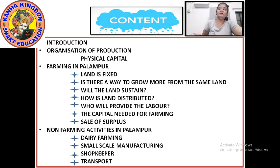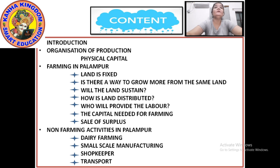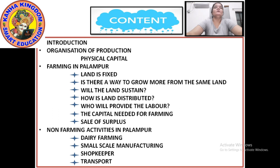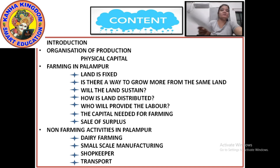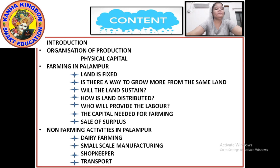Then the farming done in Palampur. Farming means — is the land fixed to the farmers? Is there a way to grow more on the same land? Do the farmers grow the same crop or do they rotate the cropping? Then will the land sustain — is it necessary to be careful in its use, how is the land to be used?